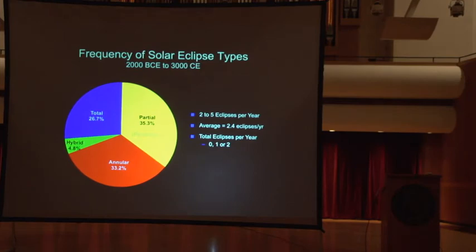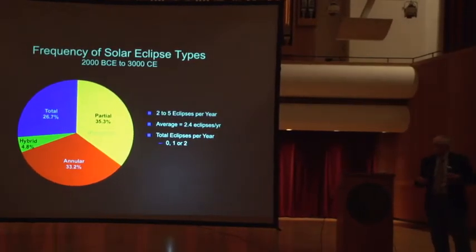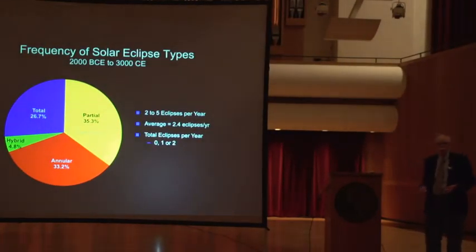How often do these various types of eclipses take place? If we look at 5,000 years of time, from 2000 B.C. to 3000 A.D., there are about 12,000, a little under 12,000 solar eclipses during that 5,000 years. That average is about two and a half eclipses every year. This pie chart sort of breaks it down by category. About 35% of those eclipses are partial, only the penumbral shadow hits the Earth. About 33% are the annular type, and only about a quarter of them are total eclipses.